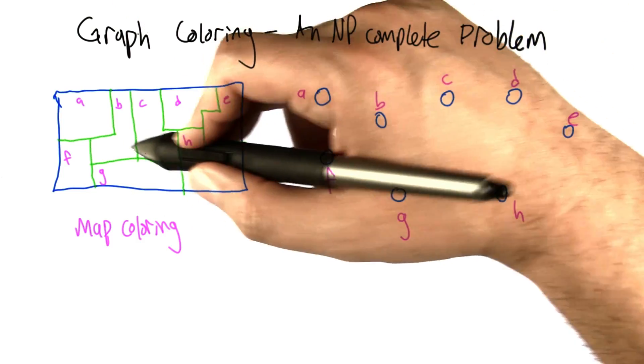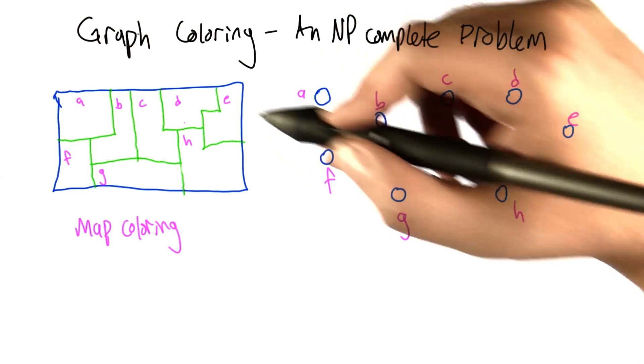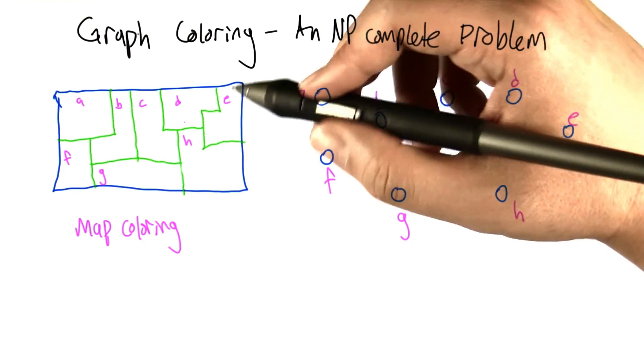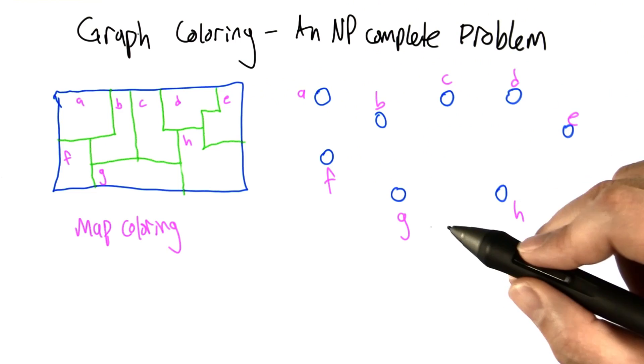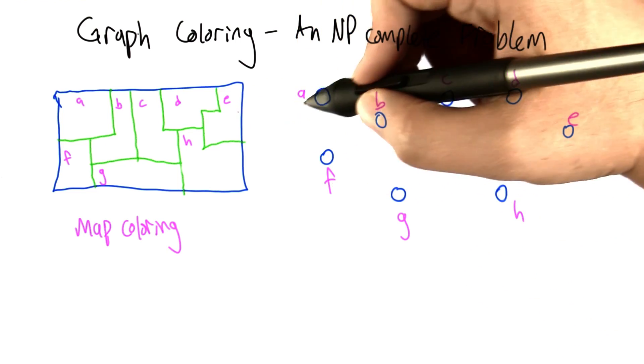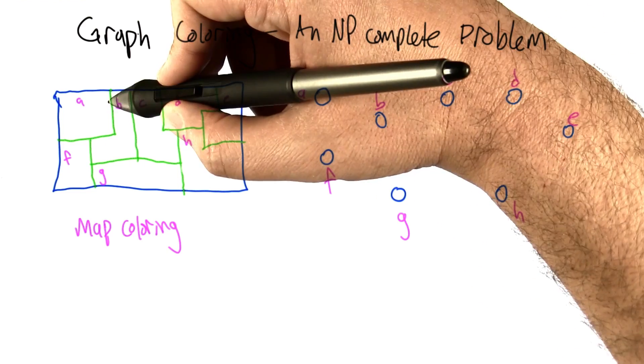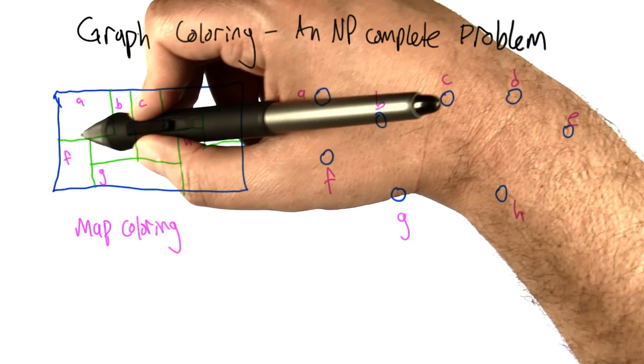We can actually think of this as a problem on graphs. In particular, we're going to make each region on the map correspond to a node in a graph. And we're going to connect two nodes of the graph if they share a border and therefore can't have the same color in the map.